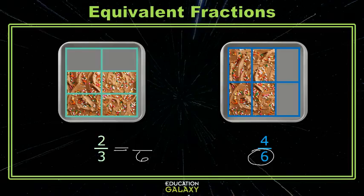I'll need to multiply two-thirds by a fraction equivalent to one, and that just means that we're going to multiply the top and bottom by the same number. So now you see that four-sixths is equivalent to two-thirds.